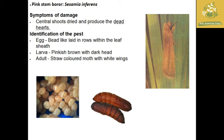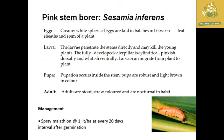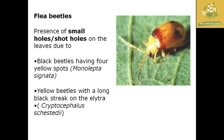Next is the pink stem borer, whose scientific name is Sesamia inferens. The major symptom is the dead heart symptom where the central shoot is dried. Eggs are bead-like, laid in rows within the leaf sheath. The larva is pinkish brown with a dark head and the adult is a straw-colored moth with white wings. Management includes spraying malathion at 1 liter per hectare at every 20 days interval after germination.